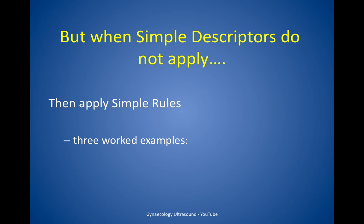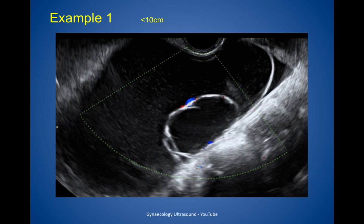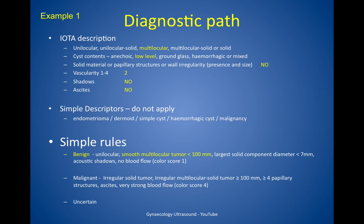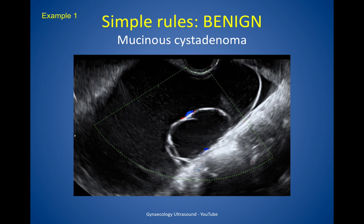Simple descriptors don't always apply, so that's when you need simple rules. Describing this lesion: it is multilocular with low level echogenicity, no solid material, some minor vascularity, no shadowing and no ascites — so simple descriptors do not apply. On simple rules it has one benign feature: it is smooth, multilocular, less than 10cm. There are no malignant features, and so on simple rules it's benign. This was a mucinous cystadenoma.